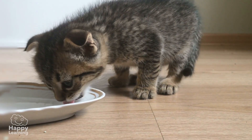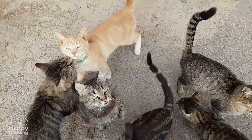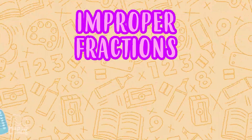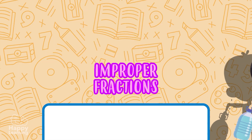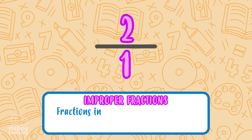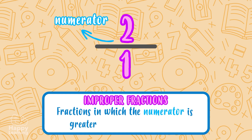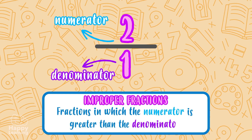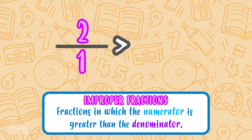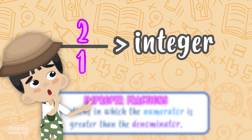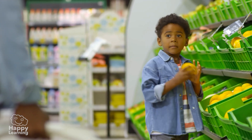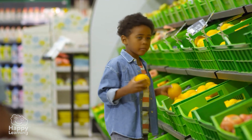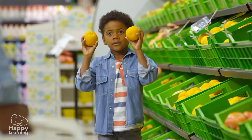The kittens are very happy! Now we are going to learn about improper fractions. Improper fractions are those fractions in which the numerator is greater than the denominator, so they are greater than the integer. How can this happen? How can we divide more parts than the integer has? Well, it occurs when the integer is not enough and we have to take a part of another integer.